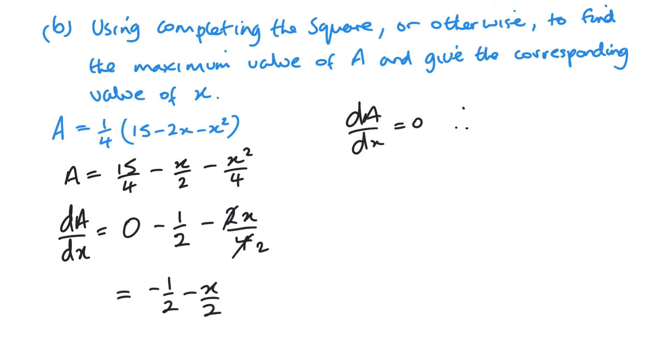So minus 1 half minus X over 2 equals 0. So we're left with X over 2 equals minus 1 half. X equals minus 1. So that finds our value of X.